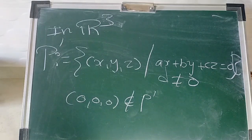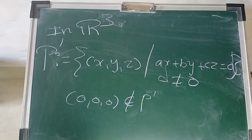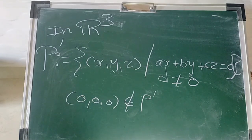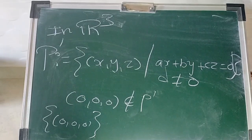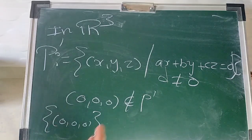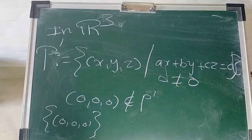In summary, the subspaces of R² are the lines passing through the origin, and the subspaces of R³ include the planes passing through the origin. One simple note: we are just considering standard subspaces. The zero vector (0,0,0) is also a subspace of R³. There may exist other subspaces of R² and R³, but in terms of lines or planes, only those passing through the origin can work as subspaces. Thank you so much for watching this video, bye bye.